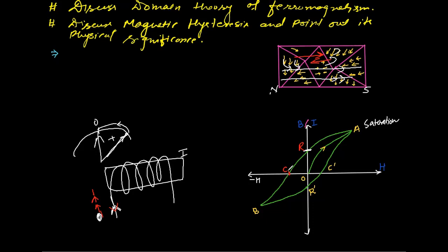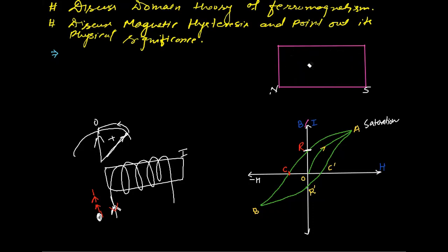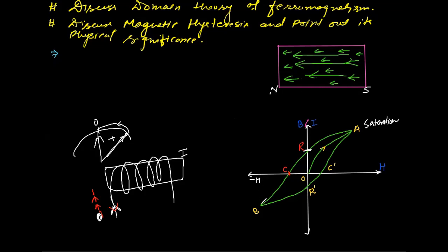Continuing in the reverse direction of current, you can see the magnetization builds up in the reverse direction. If you increase the reverse magnetizing field further, the material reaches reverse saturation. Then, reducing the reverse current back toward zero and then increasing in the positive direction, the intensity of magnetization traces a symmetric path on the other side. The magnetization does not reach zero immediately when the reverse field is removed — it follows a similar retentivity behavior.